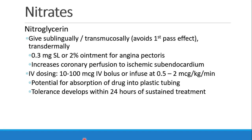Nitroglycerin can be given by many different routes. It can be given sublingually or transmucosally, and the advantage of that is we avoid the first-pass effect, because absorption through those structures will drain into the superior vena cava, thus bypassing the liver. You'll see people getting sublingual nitroglycerin pills, a spray, or some ointment or paste that can be put on the skin for treatment of angina pectoris — this increases perfusion to ischemic parts of the heart. When we give nitroglycerin IV, you may give it as a bolus — typically 10 to 100 micrograms IV. If you run an infusion, you'd run it at 0.5 to 2 micrograms per kilogram per minute. There is some possibility that it absorbs into plastic tubing, so we recommend running about 10 cc's out through the tubing to bind up any plastic binding sites.